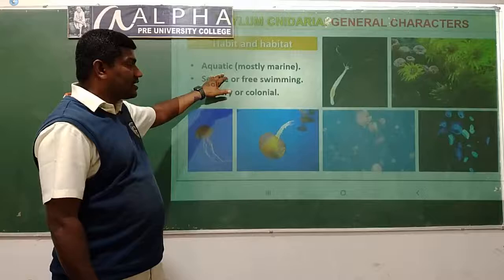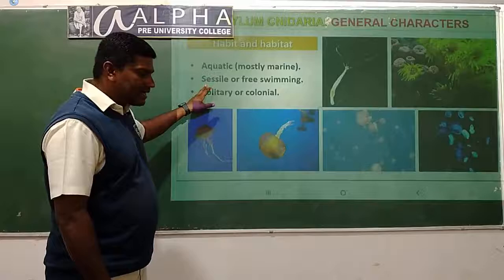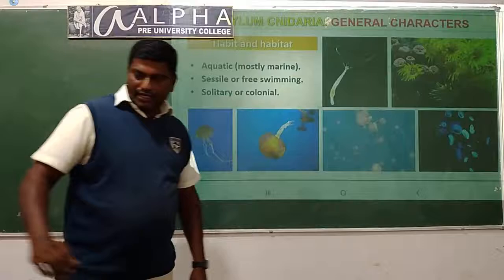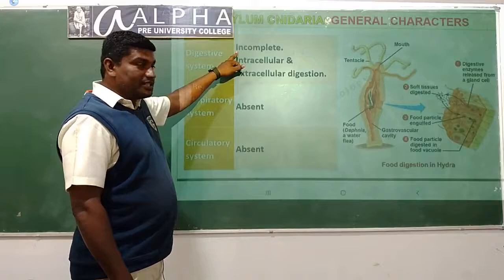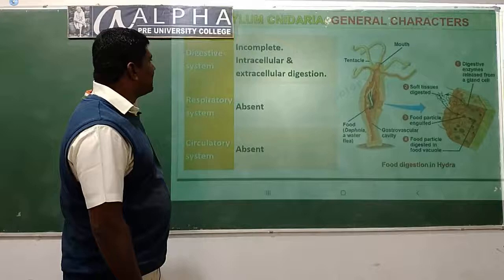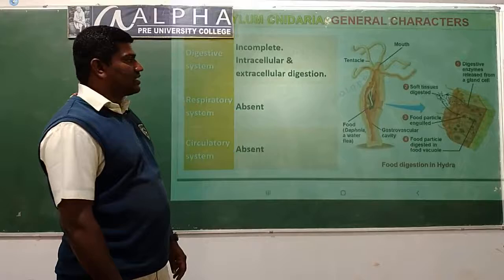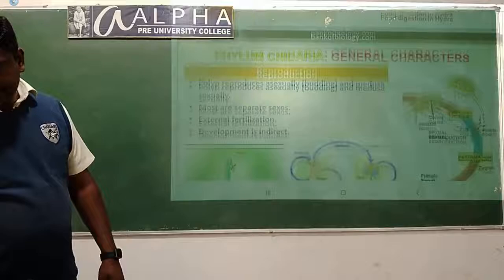Habit and habitat: they are completely aquatic, most of them are marine, sessile or free swimming, solitary or colonial. The digestive system is incomplete - the animal which contains only one opening for both ingestion and egestion is called an incomplete digestive system. Intracellular and extracellular digestion is seen in Cnidaria. Respiratory system and circulatory system are also absent.